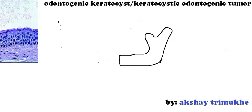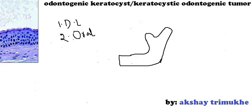Odontogenic Keratocyst can be derived from the dental lamina — that is, cell rests of Serres — or eminence of dental lamina, which are cell rests of Serres. The second source is your oral epithelium. You should question why oral epithelium, because oral epithelium is not an odontogenic entity. When we talk about oral epithelium, just consider the basal cells of the oral epithelium.